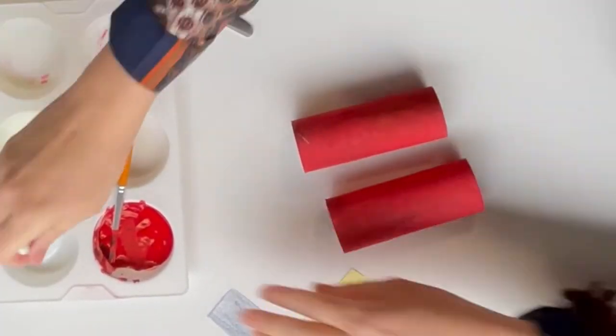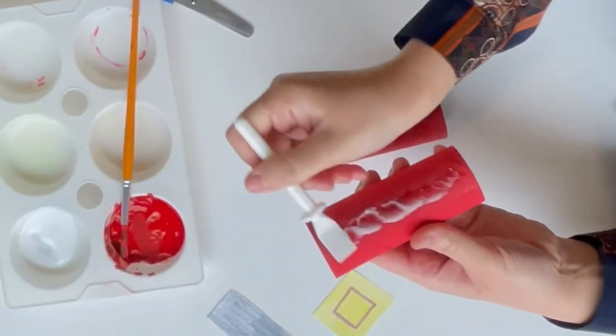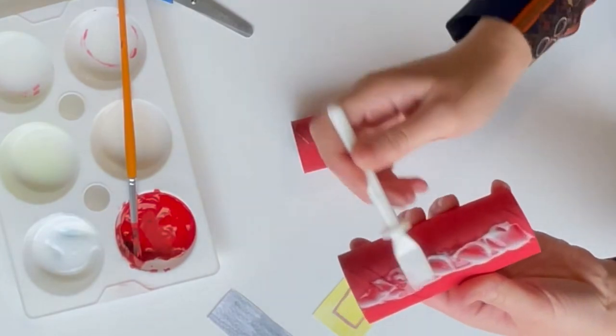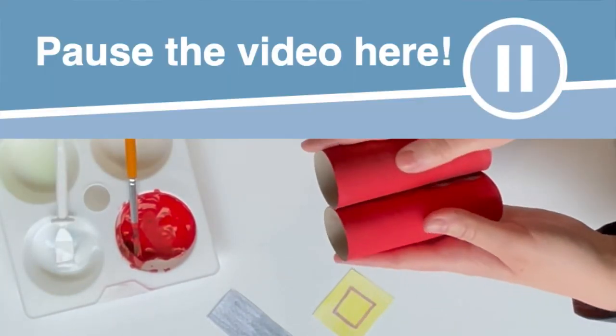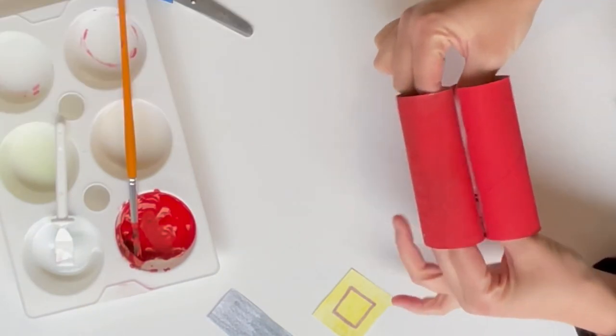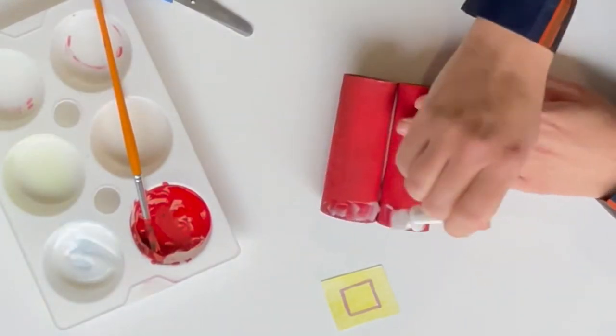Once your red tubes are thoroughly dry, use some glue to stick them together. Pause the video here until you are ready for the next step. Place glue around the end of the toilet roll.